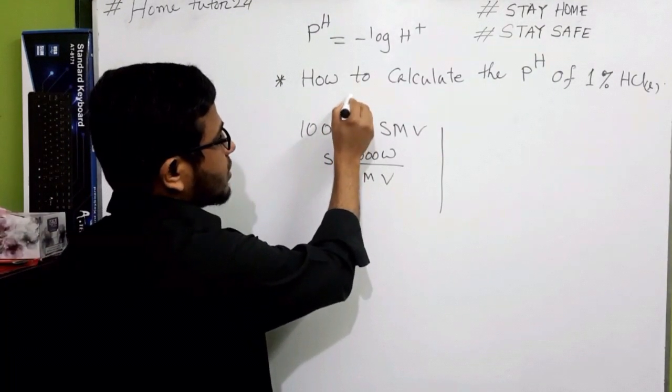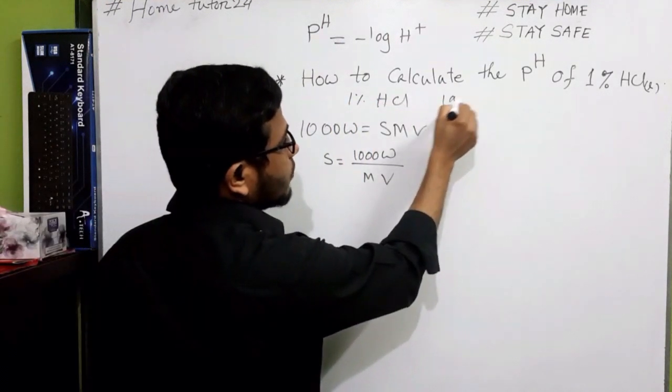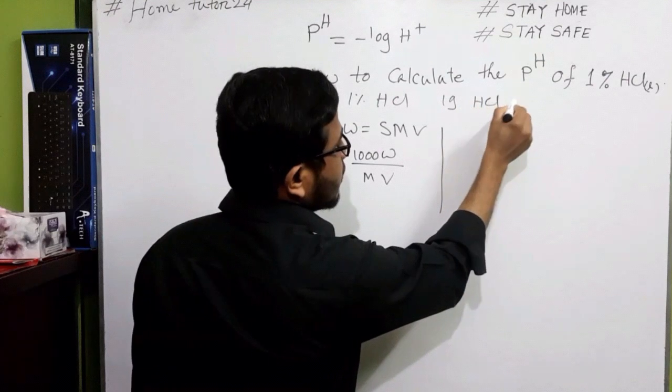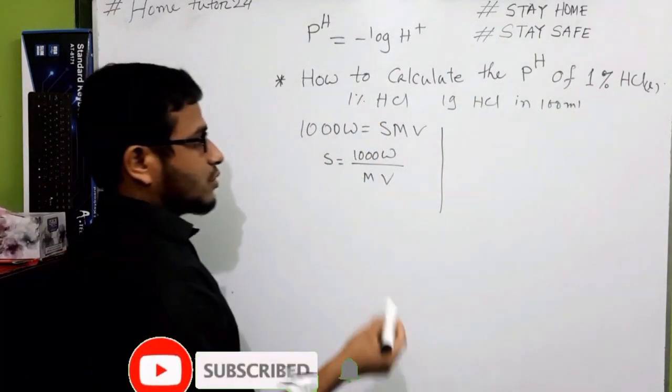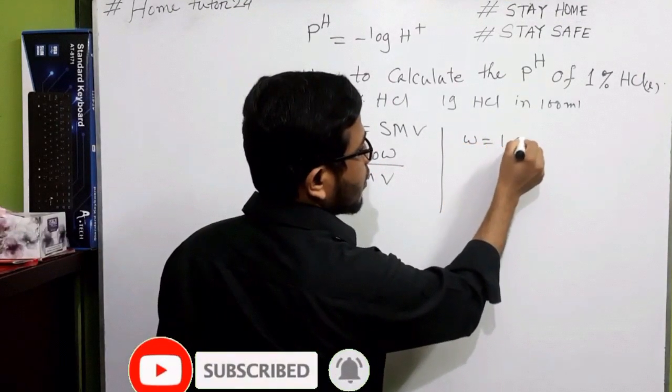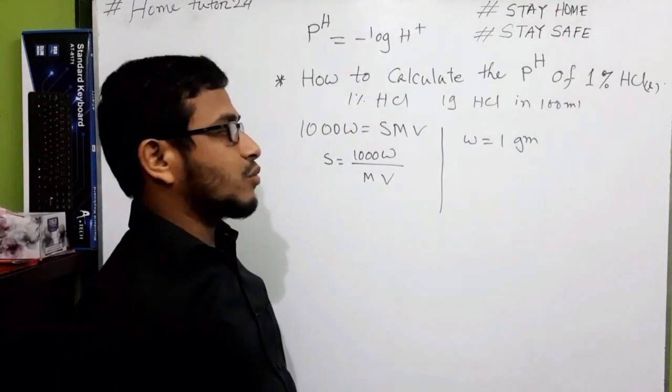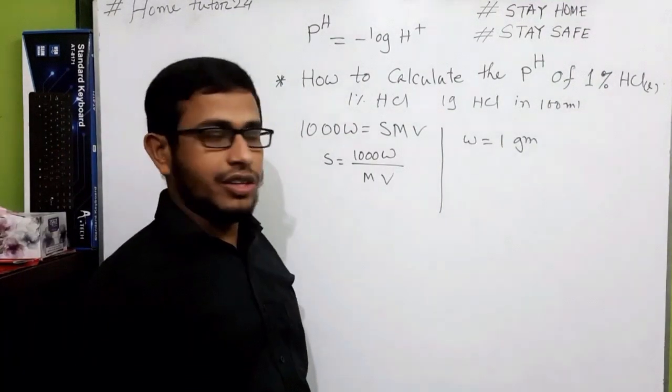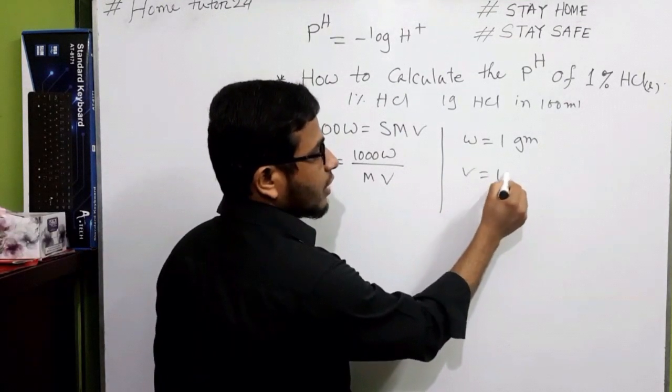1% HCl means 1 gram HCl in 100 ml solution. So we can say that w₀ equals 1 gram, because 1% HCl solution means 1 gram HCl in 100 ml solution. So there, V will be 100 ml.